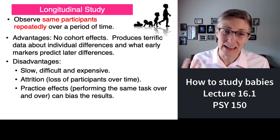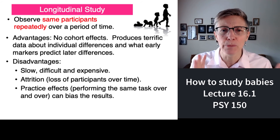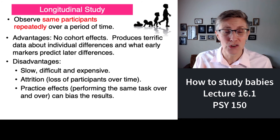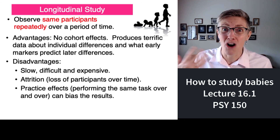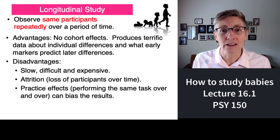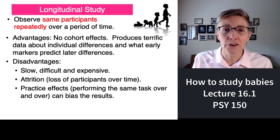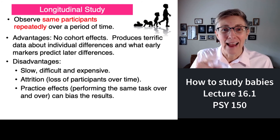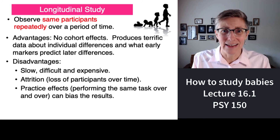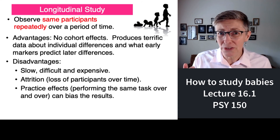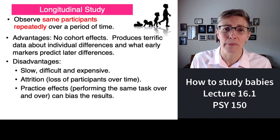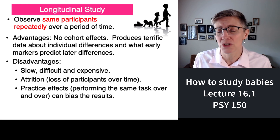But longitudinal studies have their own drawbacks. First, they are super expensive and work-intensive, because before you can publish your research results you may have to wait 20 or 30 years. And what happens over the course of 20 or 30 years? Something called attrition. It's going to be harder and harder to find your subjects as the study gets longer and longer. It's easy to find someone tomorrow who you ran in a study today, but to find them 20 or 30 years from now is really hard. And maybe 20 or 30 years from now, even if you find them, they don't want to participate anymore — they're bored with it. So you lose a lot of participants over time.